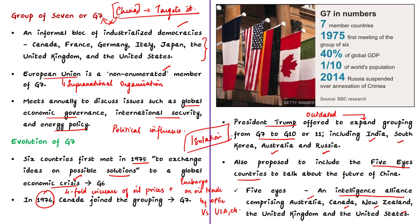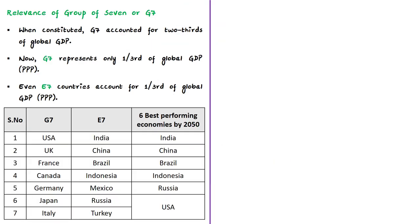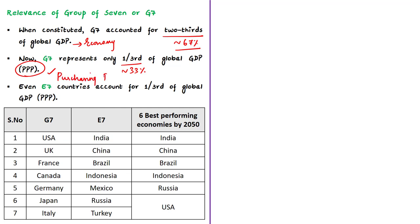The author notes that if India is invited, it should join the grouping despite China's objections. India has already attended several G7 summits as a special invitee, including last year's summit. Regarding G7's economic relevance, when it was constituted the G7 countries accounted for close to 66% of global GDP. Now their GDP represents only around 33% in purchasing power parity terms, and by 2050 they are expected to account for less than one-third of global GDP.